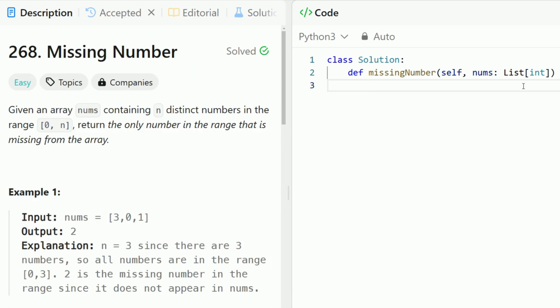All right, now let me show you my favorite solution. n equals len nums and the expected summation, the expected sum of 0 to n is equal to n times n plus 1 divided by 2.